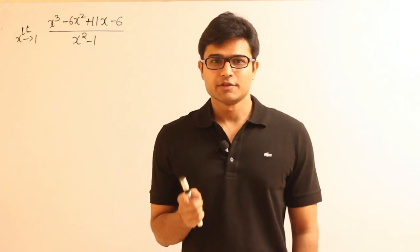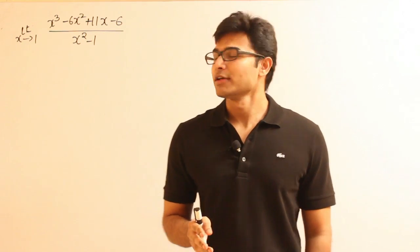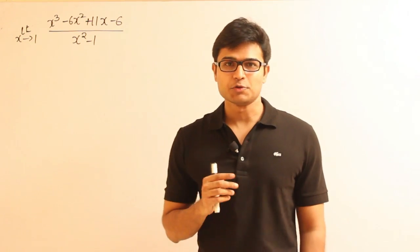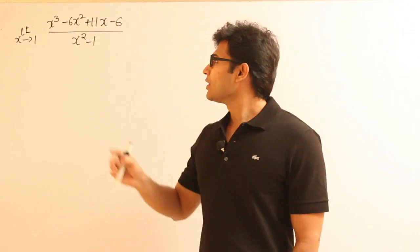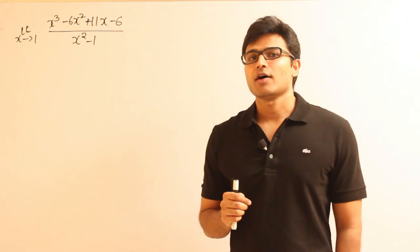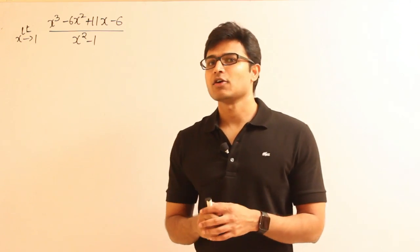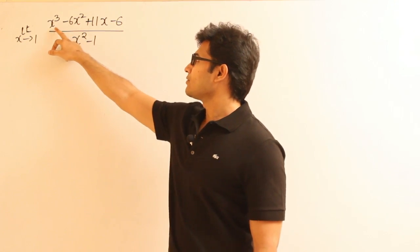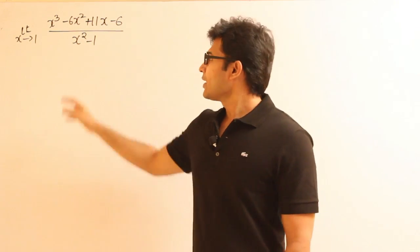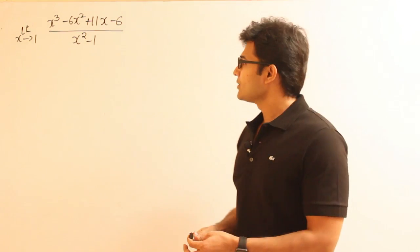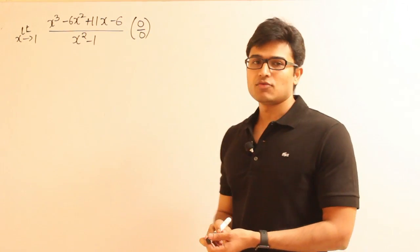Let us see one more example of the same kind. Again, assuming the options don't ask whether the limit exists at 1 or not. The question is: limit x tends to 1 — asking what happens to the function as x approaches 1. Try substituting 1 directly. You get 1 minus 6 plus 11 minus 6, which is 12 minus 12, equal to 0 in the numerator, and 1 minus 1 equals 0 in the denominator. So directly substituting gives 0 divided by 0, which is an indeterminate form.